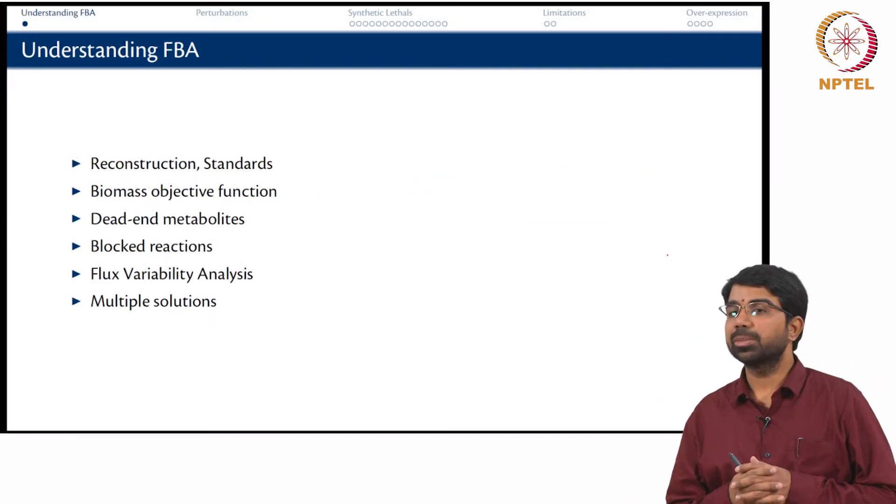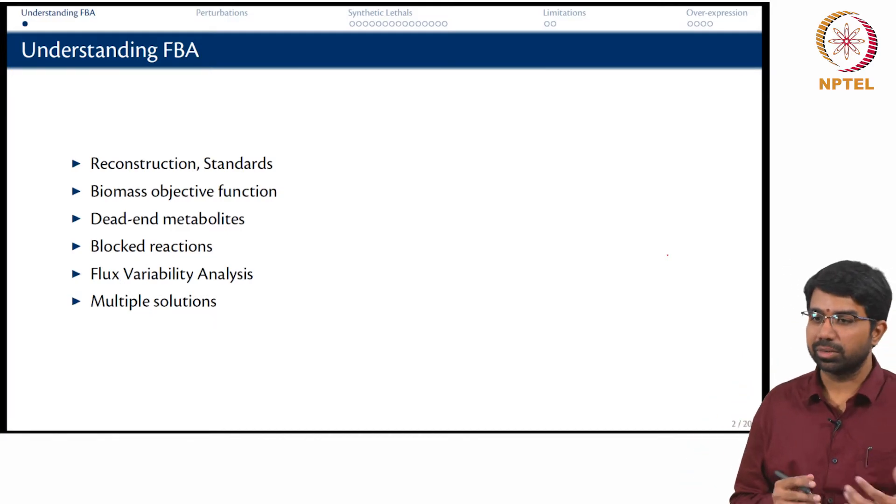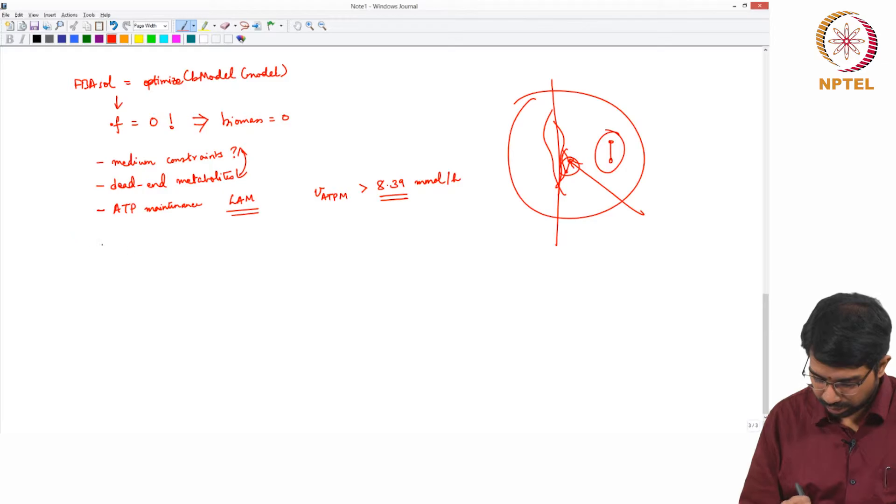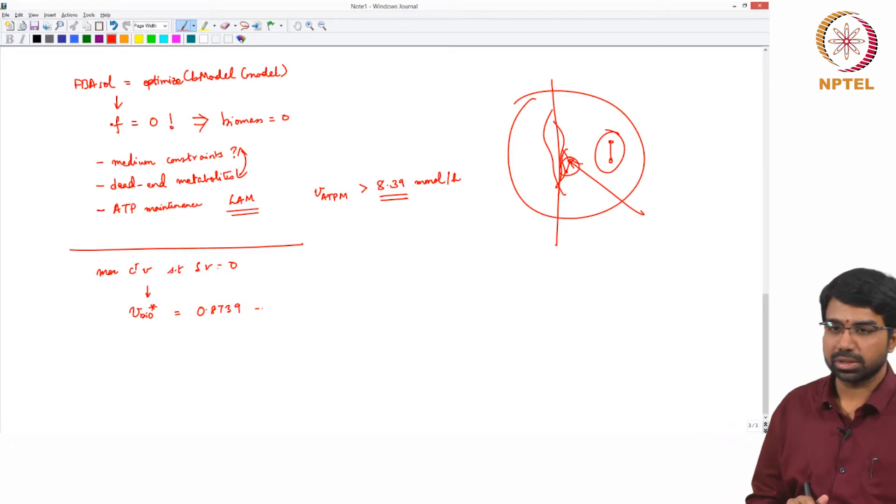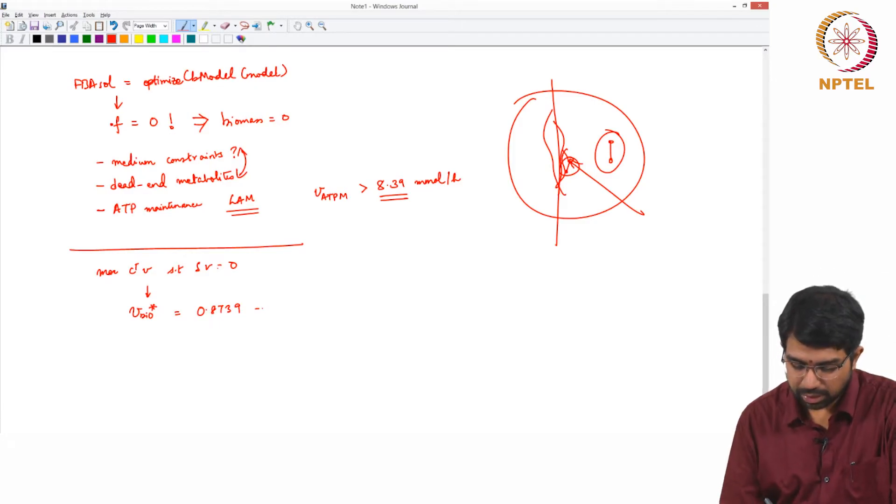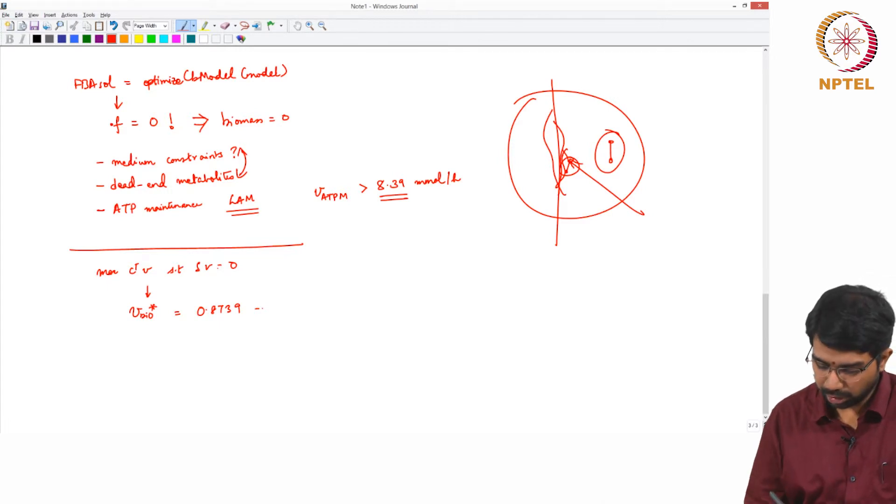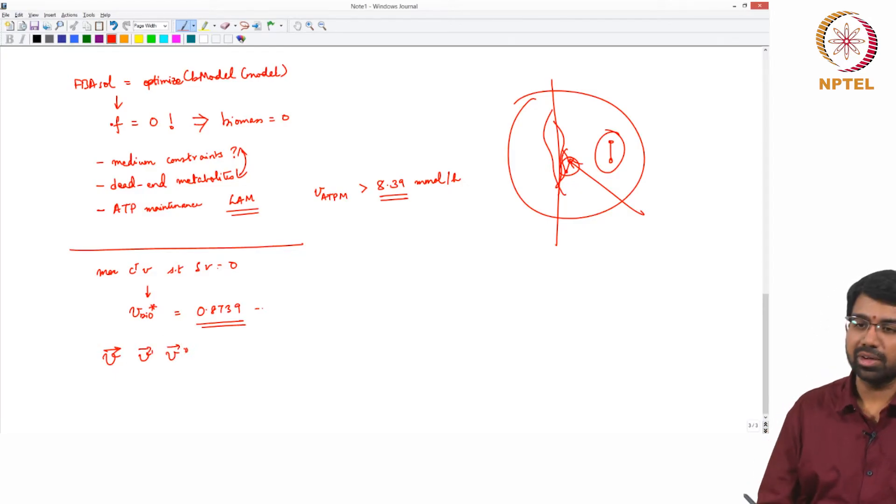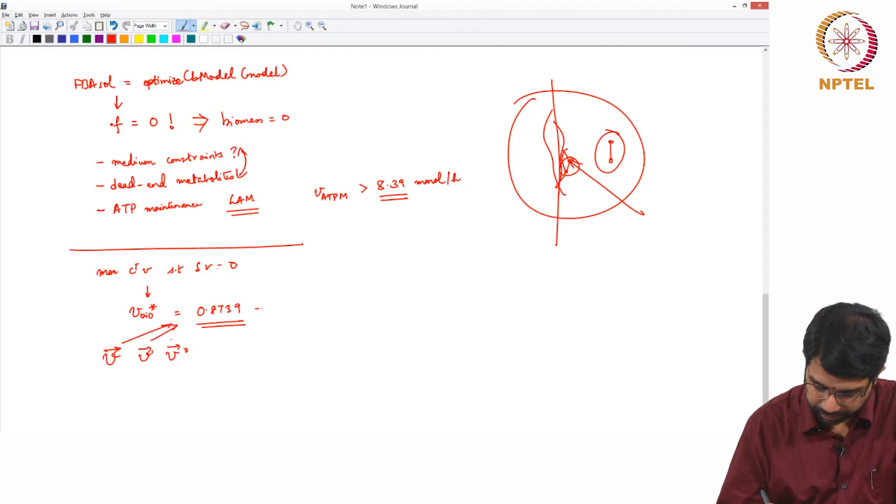And let us again revisit the concept of multiple solutions. We have been belaboring that over the last few classes and the previous lab session and so on. So this is what you are solving. So let us say the solution, let us say you got the V_bio as V_bio star. This is like the growth rate. Let us say this is 0.8739 some units that we just saw earlier in for the E. coli model. So now if you use a different solver or something else, what you are guaranteed to get is the same value for V_bio star but the V itself could be anything. You could have multiple V vectors that give the same growth rate.